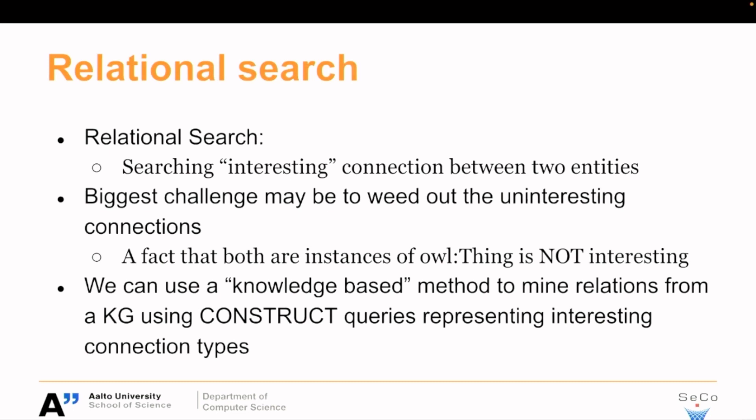We have basically a separate construct query for each of the connection types. For example, this might be 'student of,' or 'parent of,' or this kind of connection. There can also be second-degree connections created by going through, for example, two students of the same teacher.